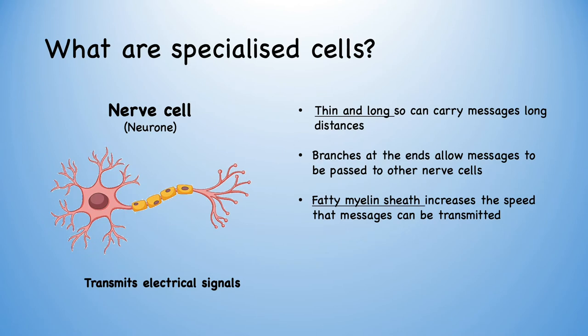Another type of specialised cell is a nerve cell, or neuron. These transmit electrical signals. They're thin and long so they can carry messages long distances, such as from our brain to our toes. They're branched at the ends to allow messages to be passed to other nerve cells. They also have a fatty myelin sheath, as can be seen by these yellow blocks, which increases the speed at which messages can be transmitted.